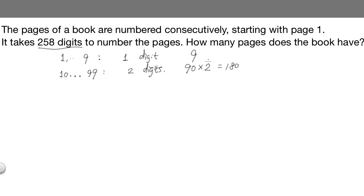So totally, 90 times 2 equals 180 digits are going to be used by page numbers with two digits. So far, all the way to page 99, we already used 9 plus 180 equals 189 digits.